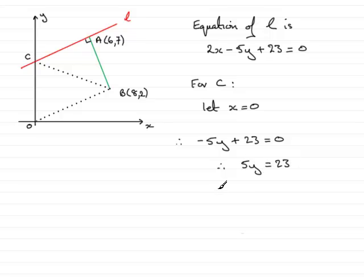and then divide both sides by 5, and y would equal 23 over 5, 23 fifths.